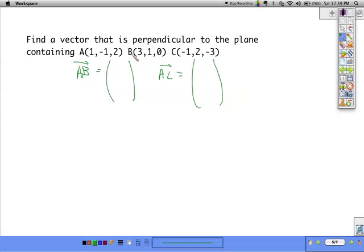Vector a, b, it doesn't matter which pair of points we use, would be 2, 2, negative 2. And then negative 2, 3, negative 5. A, b cross a, c.